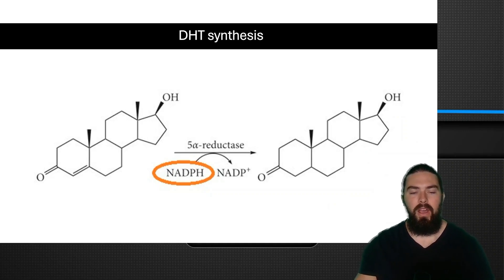As you might or might not know, the synthesis of DHT is via 5-alpha reductase and it uses NADPH as a cofactor. So this is a very reductive process. It donates its electrons to 5-alpha reductase to convert.